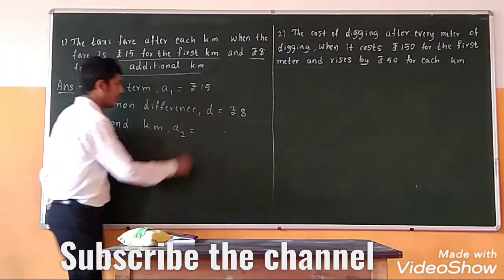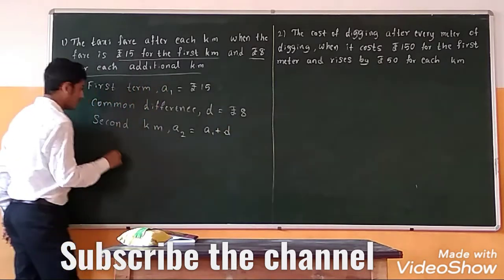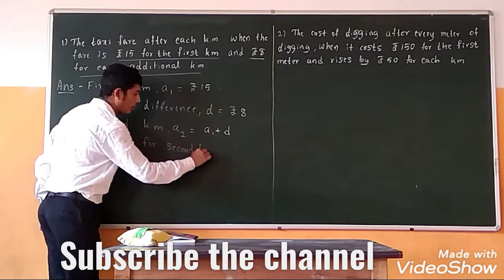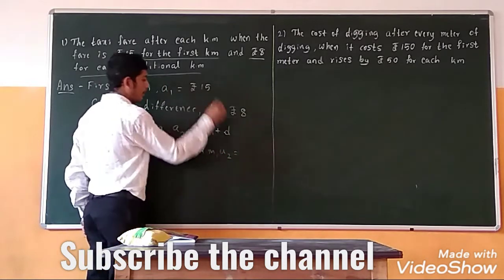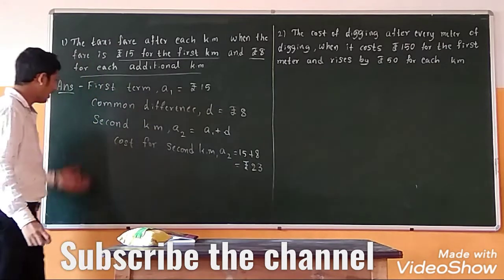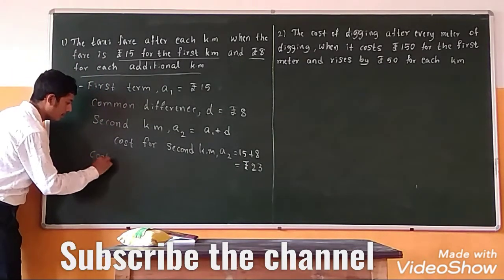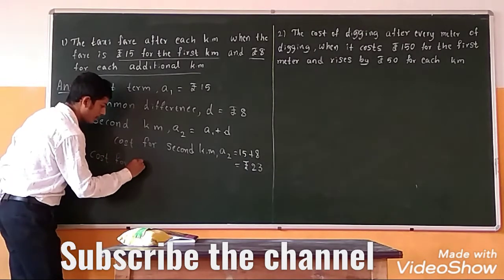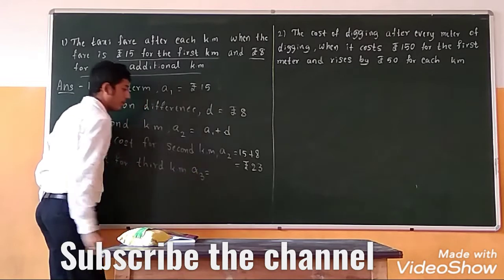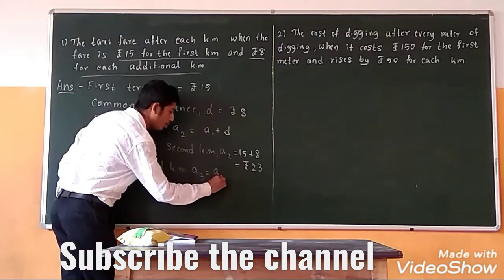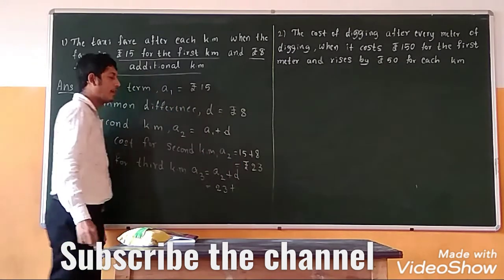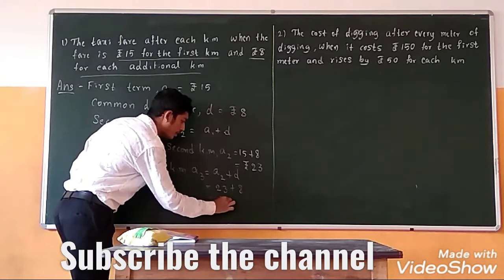The cost for the second kilometer becomes a1 plus d. So a2 equals 15 plus 8, which is rupees 23. And for the third kilometer, a3 equals a2 plus d. So a2 value is rupees 23, and a3 becomes rupees 31.